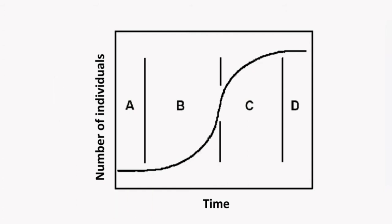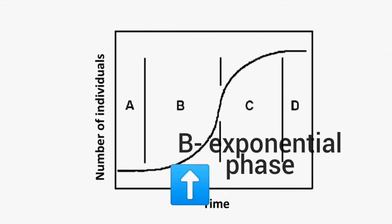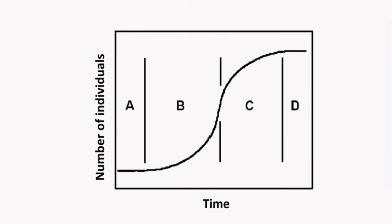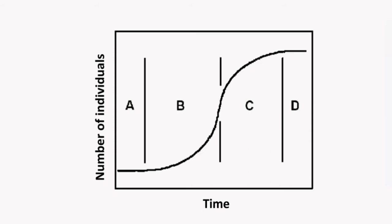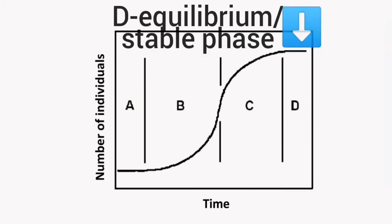Phase B is the exponential phase, where growth and increase in the number of individuals within the population is rapid. Phase C is the decelerating phase, where the population is slowly reaching the carrying capacity and the environment is providing resistance against further population growth. Once we reach phase D, we are in equilibrium, also called the stable phase.